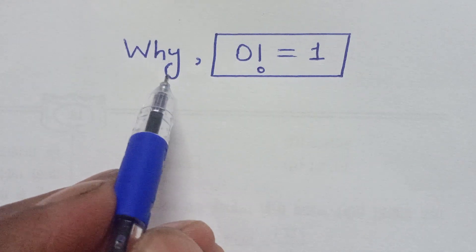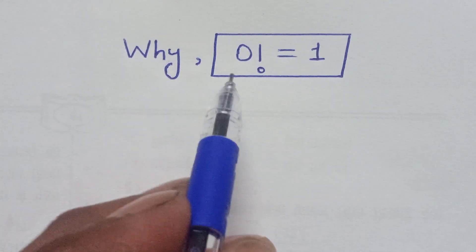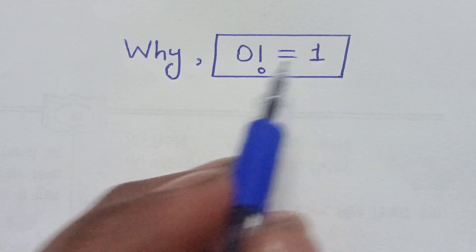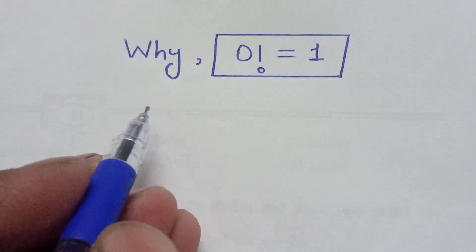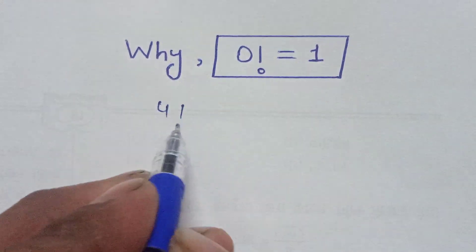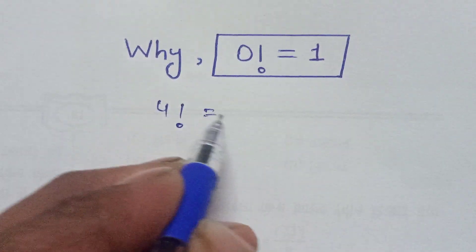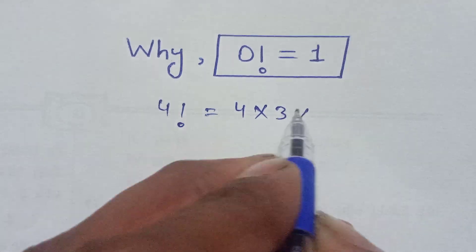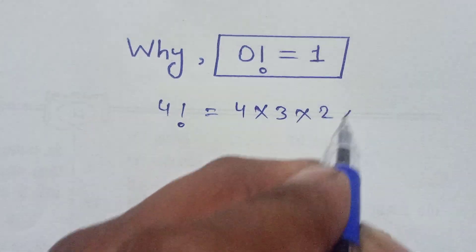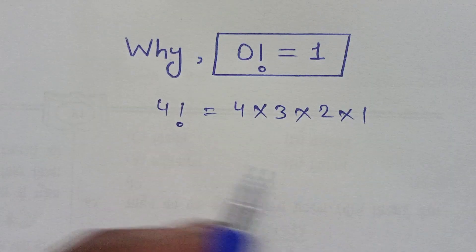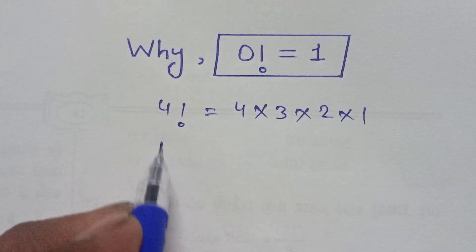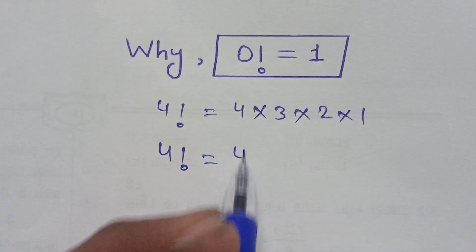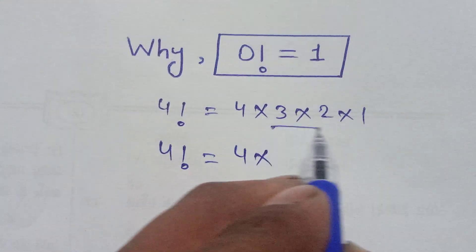In this video we discuss why 0 factorial is equal to 1. We know that 4 factorial is equal to 4 × 3 × 2 × 1. We can also write this as 4 factorial equals 4 × 3 factorial.